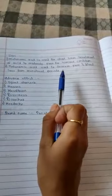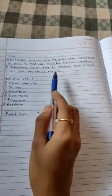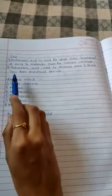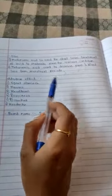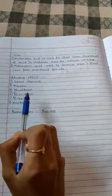The uses: mefenamic acid is used for short-term treatment of mild or moderate pain for various conditions. Mefenamic acid is used to decrease the pain and blood loss from the menstrual period.